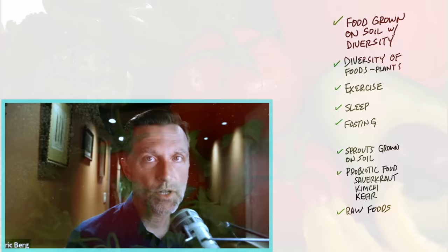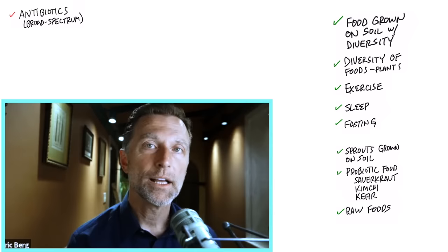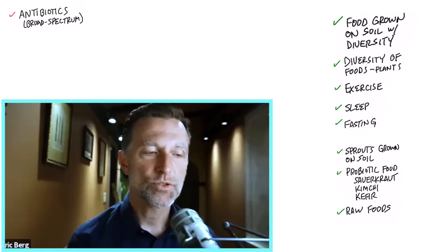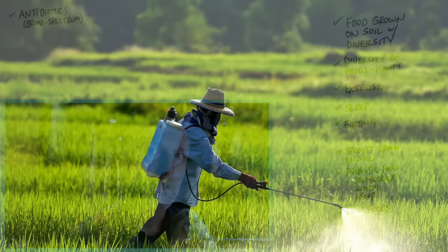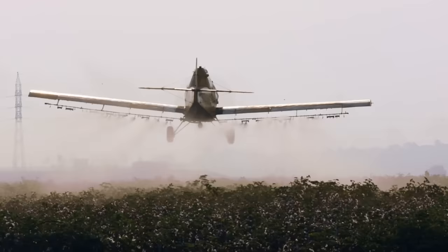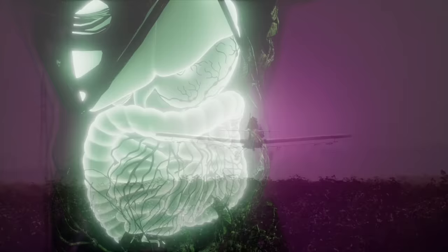Now it's very important to talk about the flip side — what lowers microbiome diversity. Number one: broad-spectrum antibiotics. It's a killer. Anytime you take an antibiotic, try to take them sparingly, and always take a probiotic at the same time or start consuming probiotic foods simultaneously. There are other things that are antibiotics that you're probably not aware of, like glyphosate in GMO foods — it's sprayed on soil and is actually classified as an antibiotic. Unfortunately, that chemical is in so many foods — almost everything — which means we need to actively work on building up our gut.